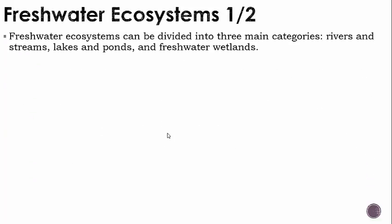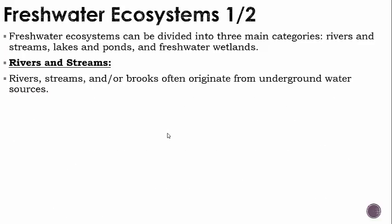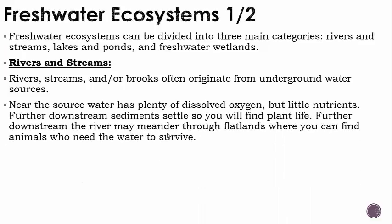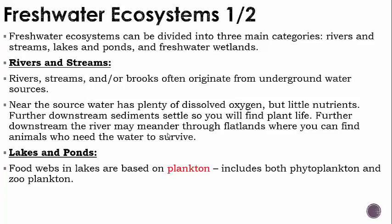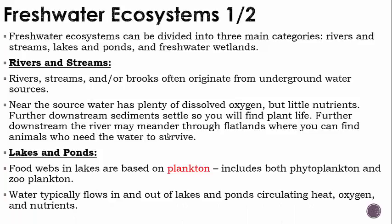Freshwater ecosystems can be divided into three main categories: rivers and streams, lakes and ponds, and freshwater wetlands. Rivers, streams, and brooks often originate from underground water sources. Near the source, water has plenty of dissolved oxygen but little nutrients, so you won't find many plants. Further downstream, sediments settle and you will find plant life. The river may meander through flatlands where animals need that fresh water to survive. Food webs in lakes are based on plankton, including phytoplankton and zooplankton. Water typically flows in and out of lakes and ponds, circulating heat, oxygen, and nutrients.